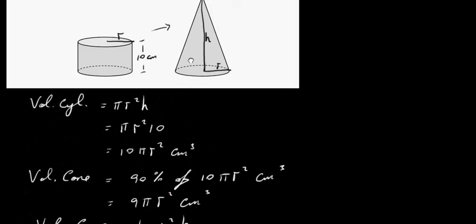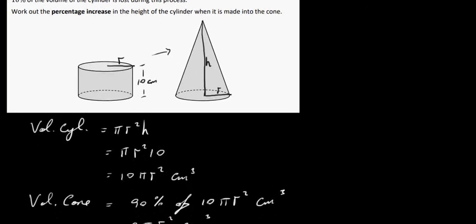So the height of our cone here is just 27 centimeters. So what do we have to do? We have to work out the percentage increase in the height of the cylinder. How much has the height here increased to make this cone here? So let's work that out.